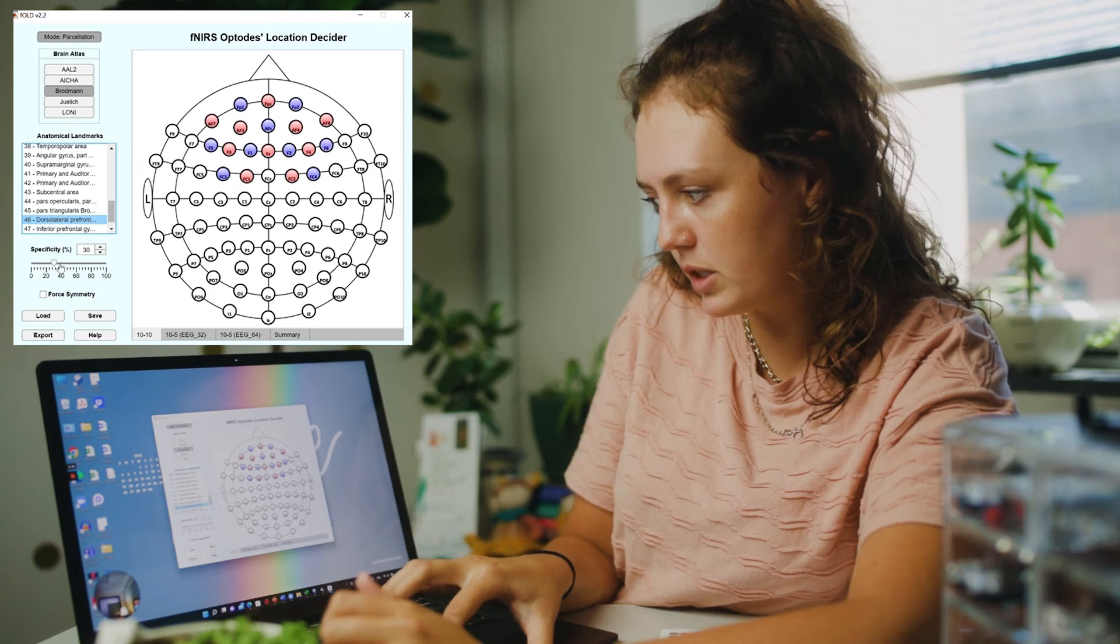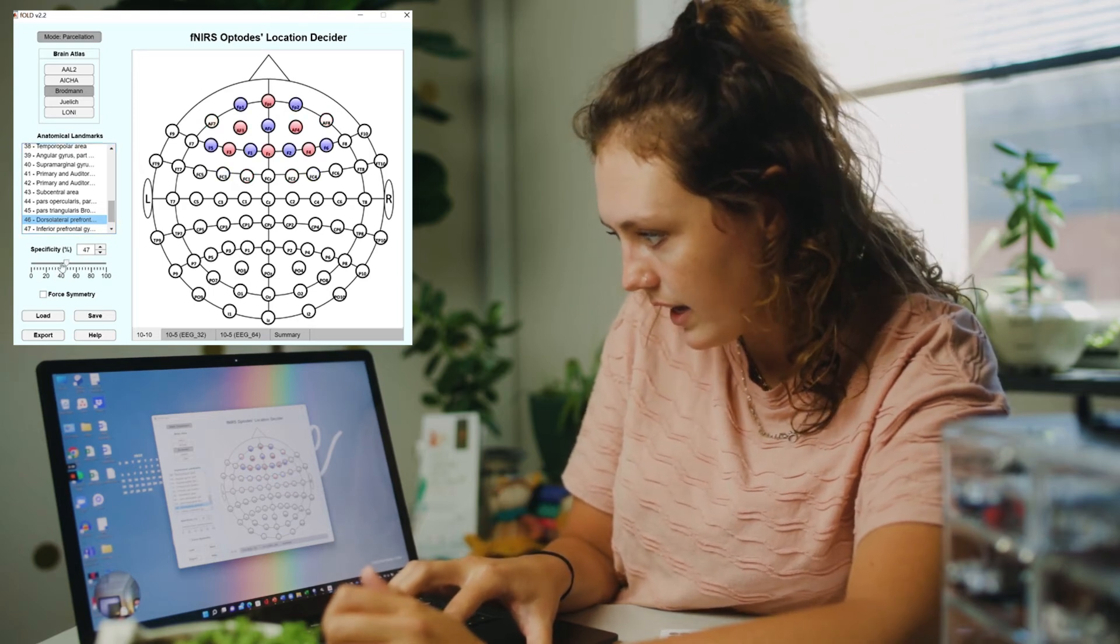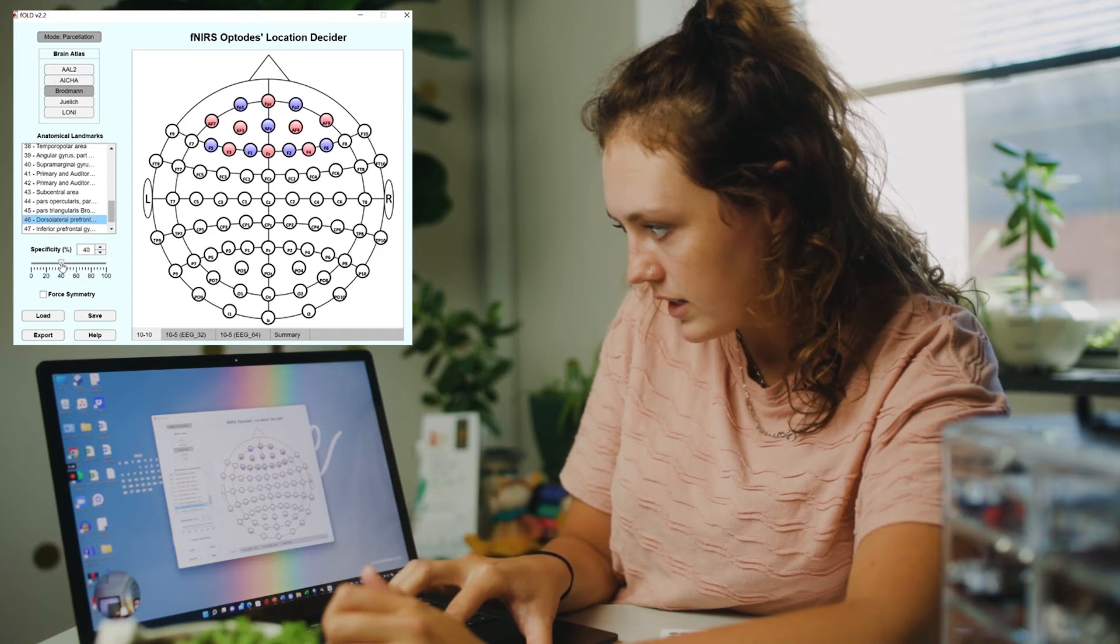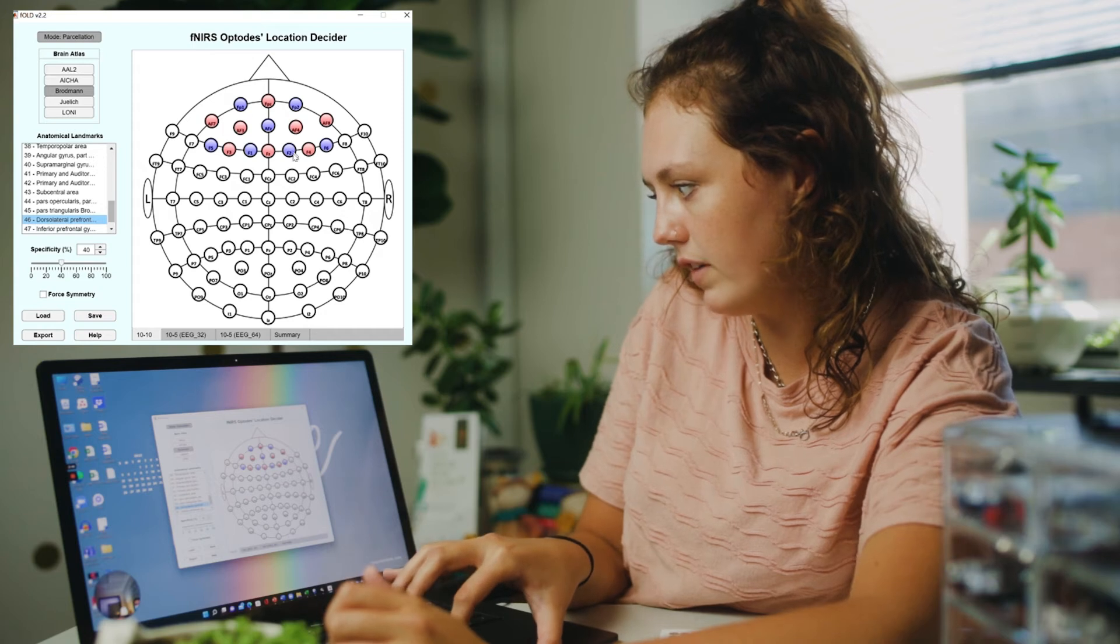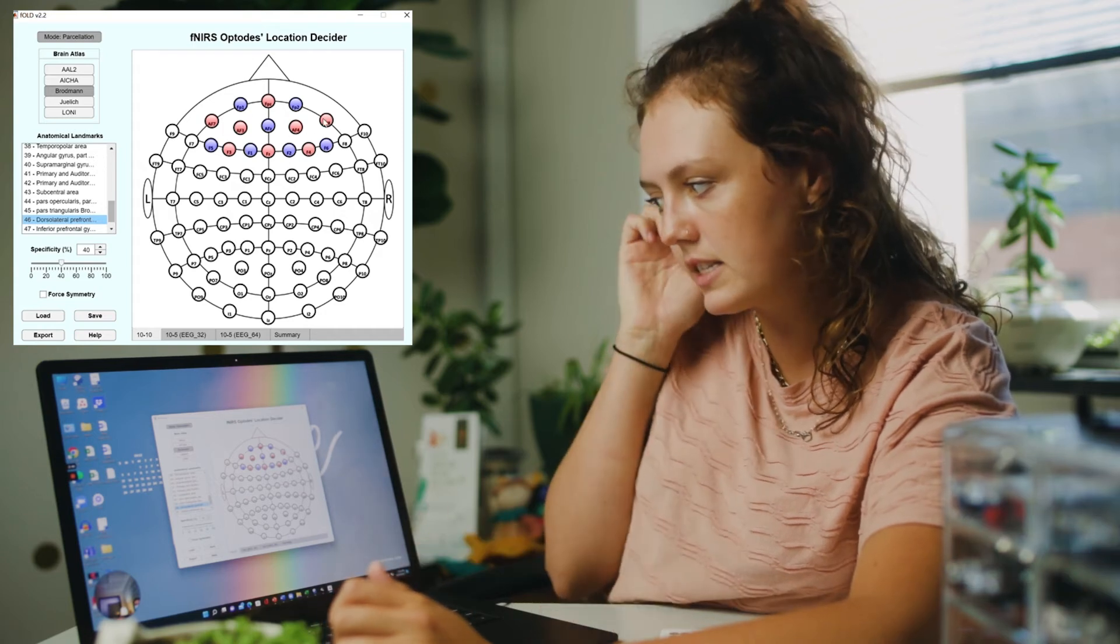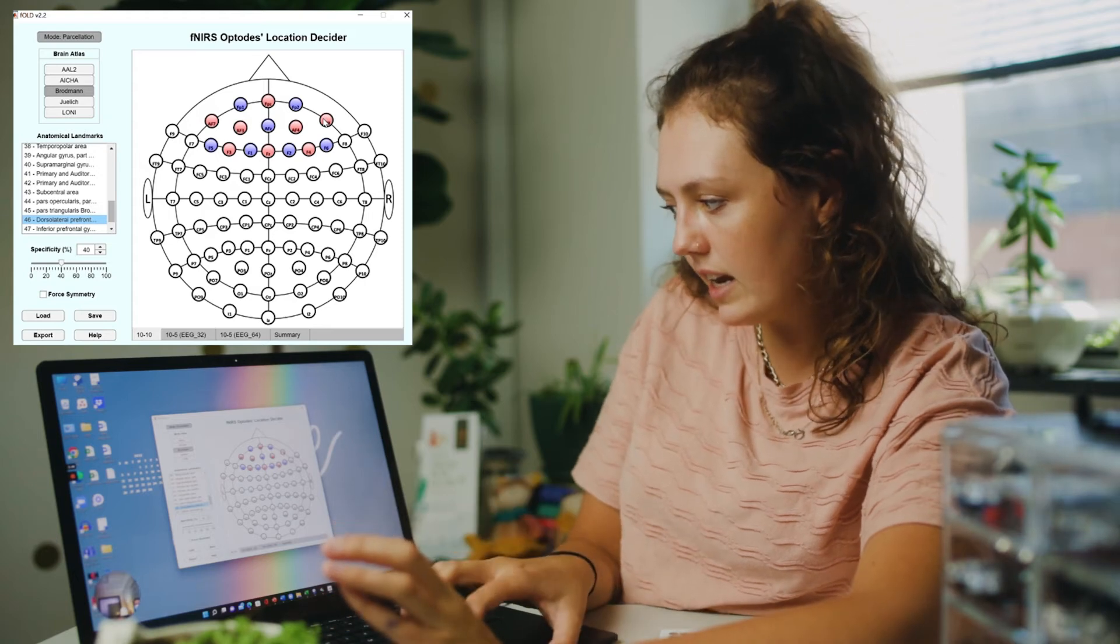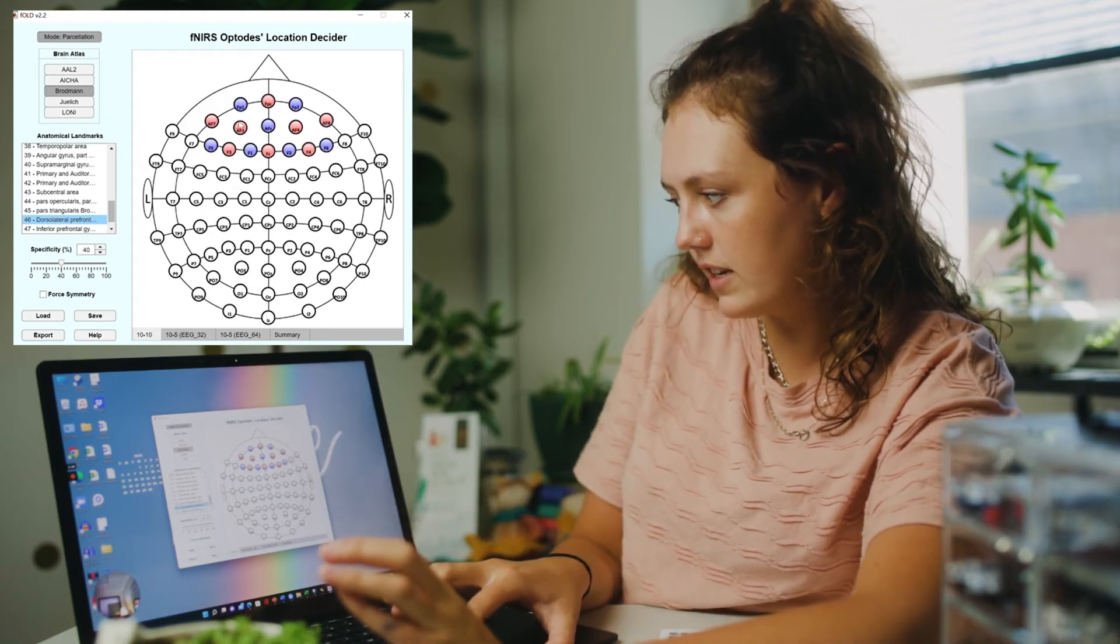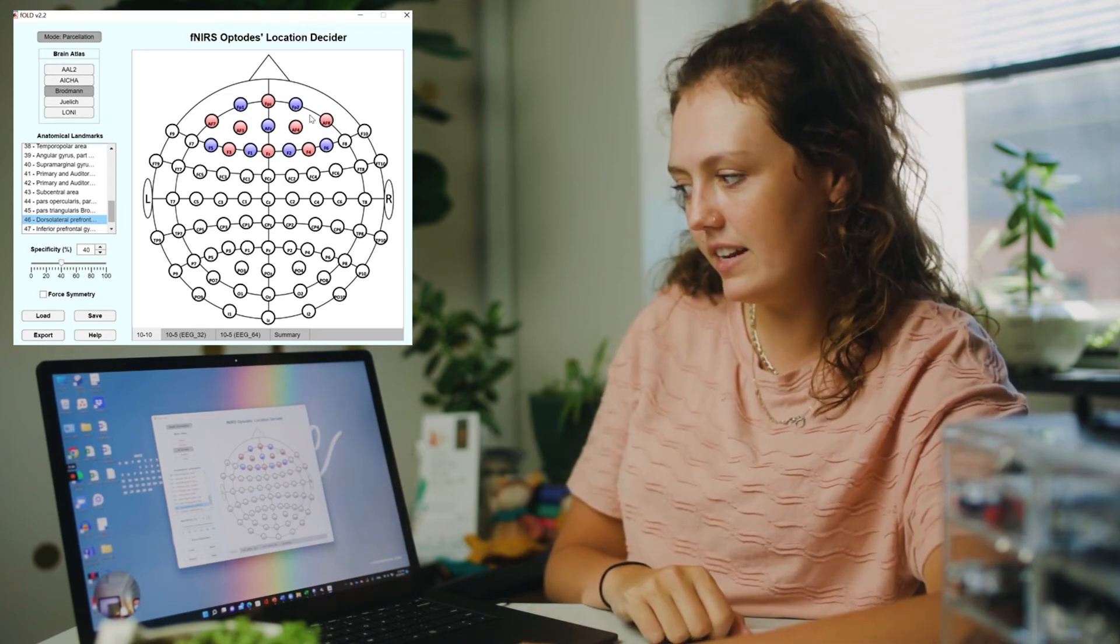So I'm going to adjust my specificity. Okay, that's too little. I think this is a perfect amount. So we have 1, 2, 3, 4, 5, 6, 7, 8 sources. That's the perfect amount of sources that we need. And we have 1, 2, 3, 4, 5, 6, 7, 8 detectors. So that's exactly the configuration that we need.